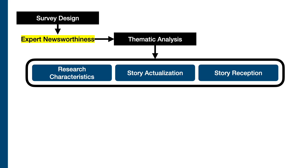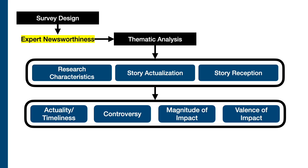The first theme relates to research characteristics — the intrinsic aspects of every article itself, such as how controversial or surprising it may be. The second key theme is about story actualization, that is, the logistical and editorial considerations involved in writing or framing a story. Finally, the third theme relates to story reception, which are the editorial considerations involved in marketing and publicizing a story. Based on these three themes and the news values literature, we identify four news values that crowd workers can reasonably evaluate a scientific article for: actuality or timeliness, controversy, magnitude of impact, and valence of impact. For each of these news values, we collect five-point Likert scale ratings from crowd workers.